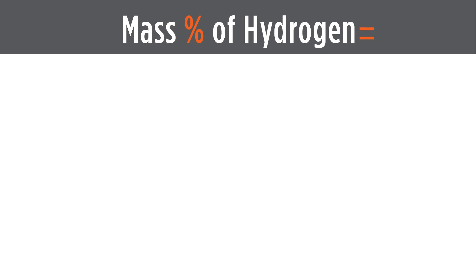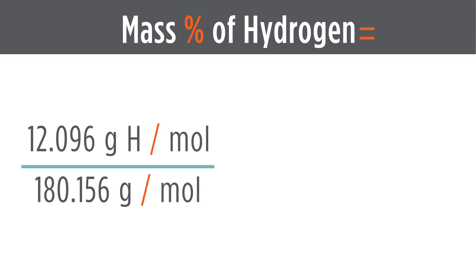If we do the same calculation for hydrogen, the mass percent of hydrogen equals the mass of hydrogen in glucose divided by the molar mass, times 100%, which gives us 6.7142%.